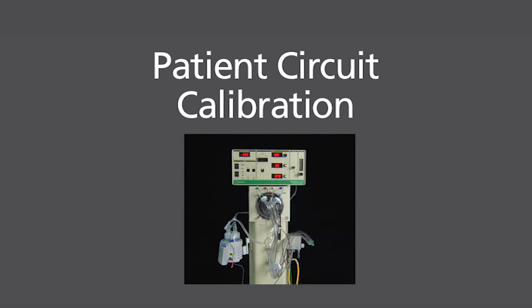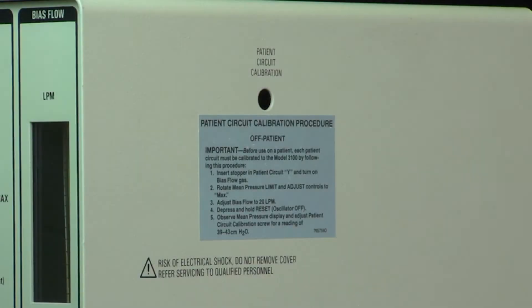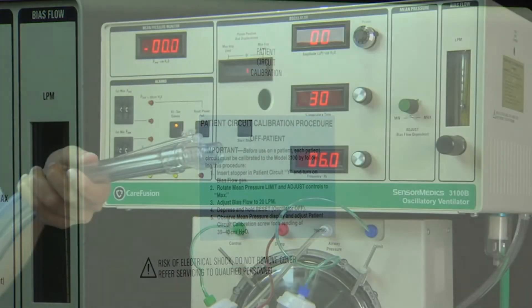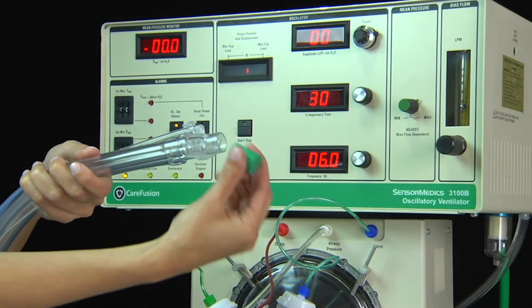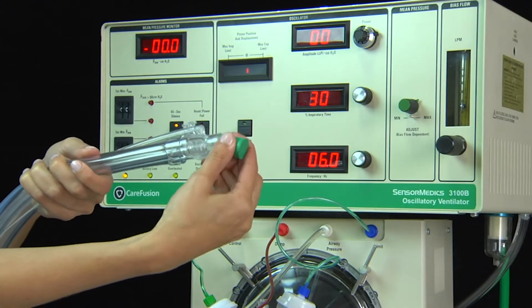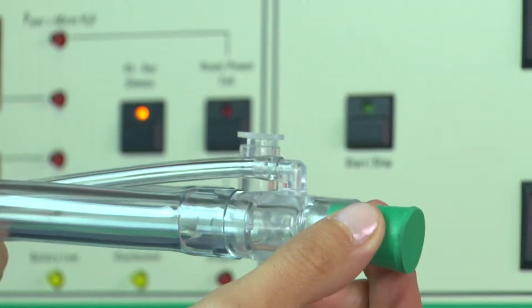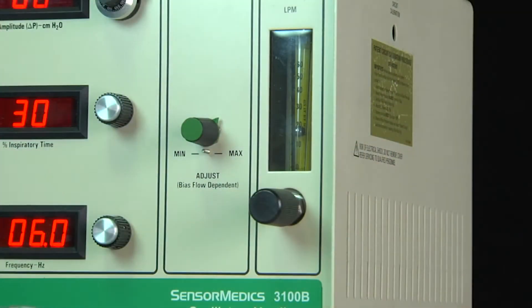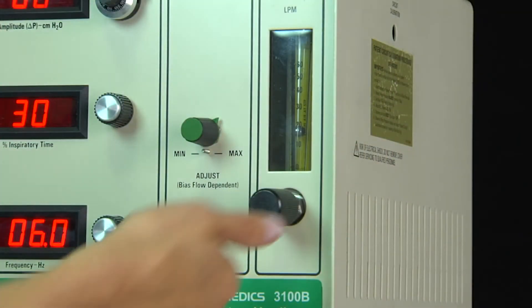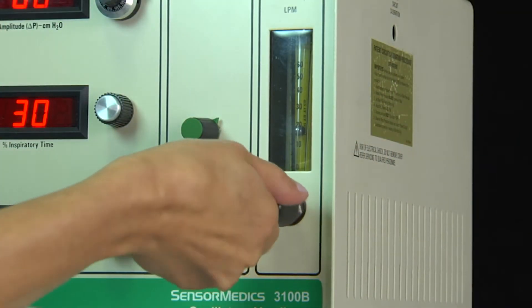Patient Circuit Calibration: To calibrate the patient circuit, locate the instruction label on the right side of the ventilator and follow these steps. Insert the stopper into the patient Y and adjust bias flow to 20 liters per minute.